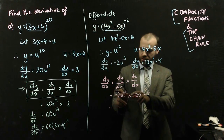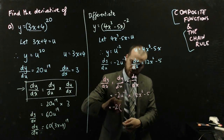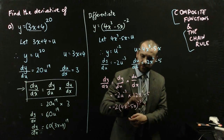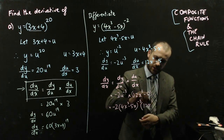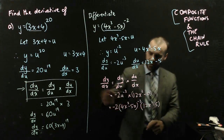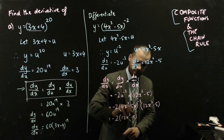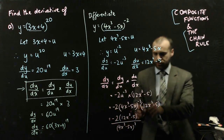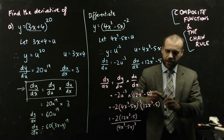Now that u is actually 4x cubed minus 5x. So I can say it's negative 2 times (4x cubed minus 5x) to the negative 3, times (12x squared minus 5). I could also write that as negative 2 times (12x squared minus 5) all over (4x cubed minus 5x) to the 3, by moving the negative power to the bottom. But since the original question had a negative power, the answer can probably keep the negative power as well — so that's probably enough.